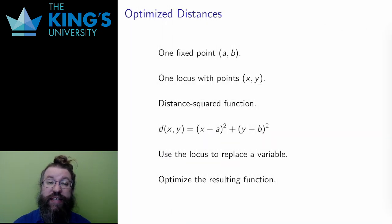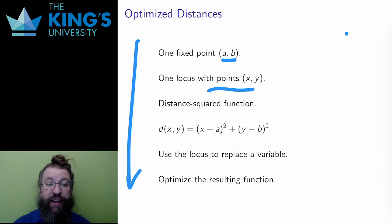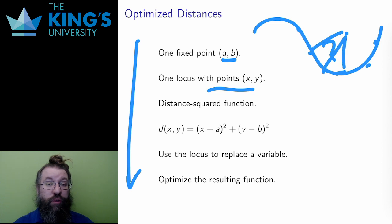So, here's the setup of an optimized distance problem. I have one fixed point, (a,b). And I'm going to have a locus with points (x,y). And I want to know where on the locus is closest to or farthest away from the point.